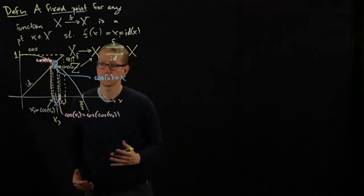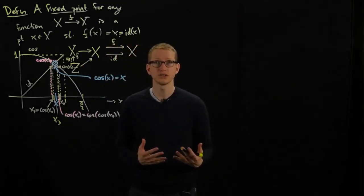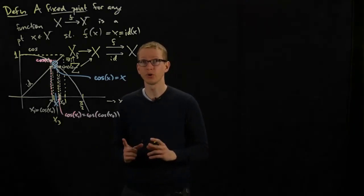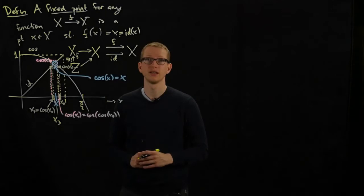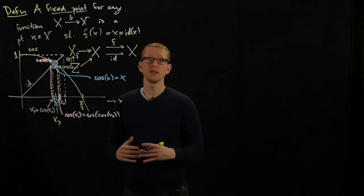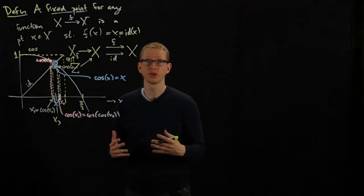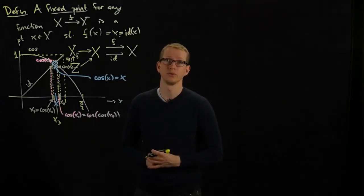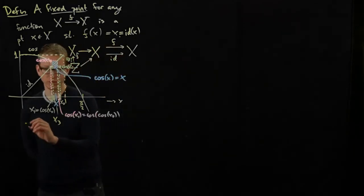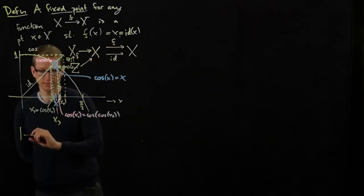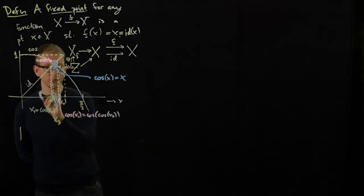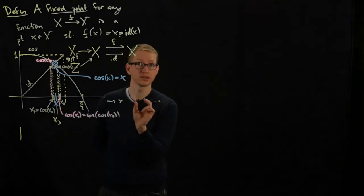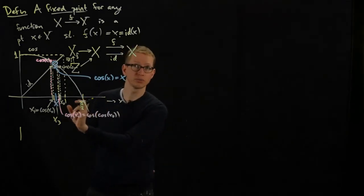So a very important question to ask is, under what conditions on a function guarantee the existence of a fixed point? Furthermore, what additional assumptions are needed to guarantee that that fixed point is unique? And then it would be even better if we had a procedure to actually calculate for us what that fixed point is to whatever degree of accuracy we would need.